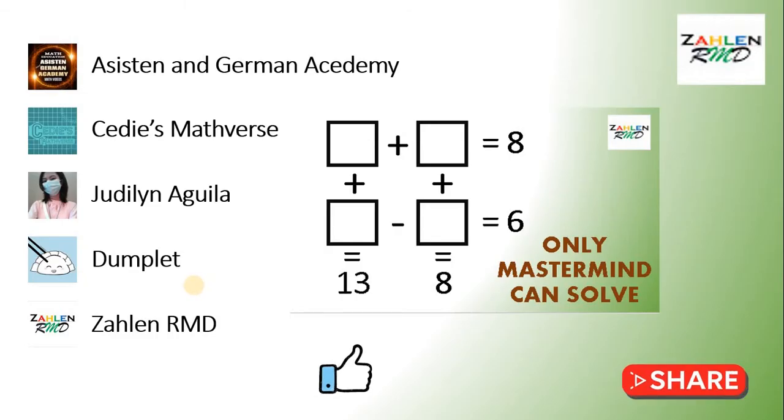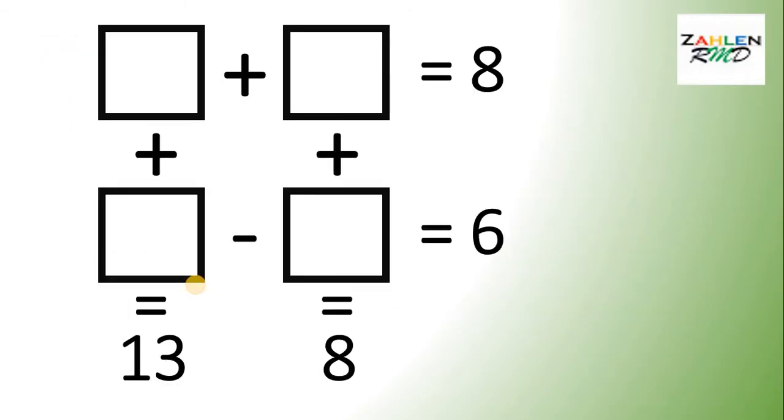Now, let's jump in to the solution. If we try to solve this using trial and error, it takes time to get the correct combination. So, what we're going to do is to replace those boxes with a letter like this. So, this is letter A, this is letter B, this is letter C, and this is letter D. At this point, we can now convert our problem into an algebra problem.